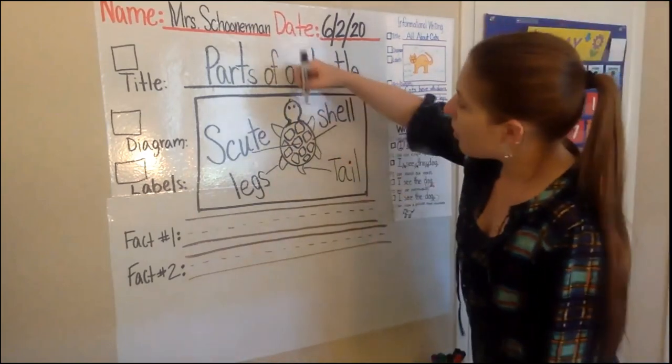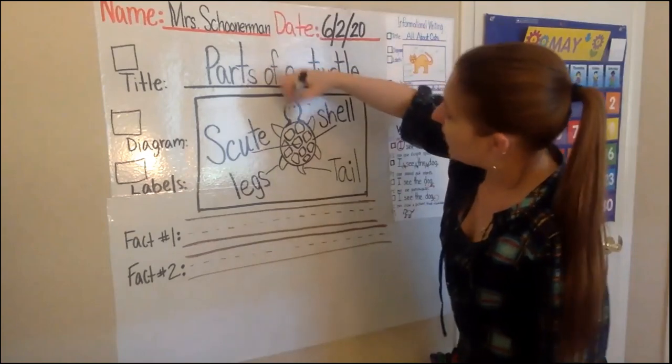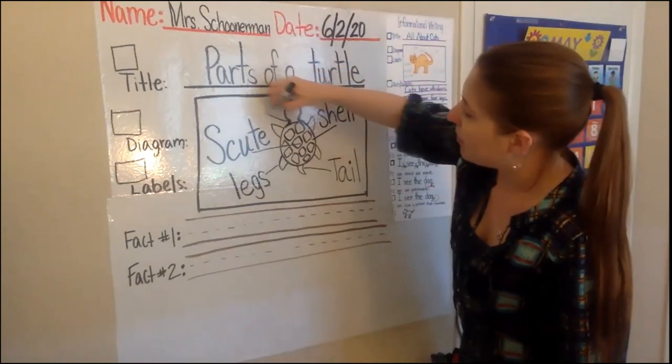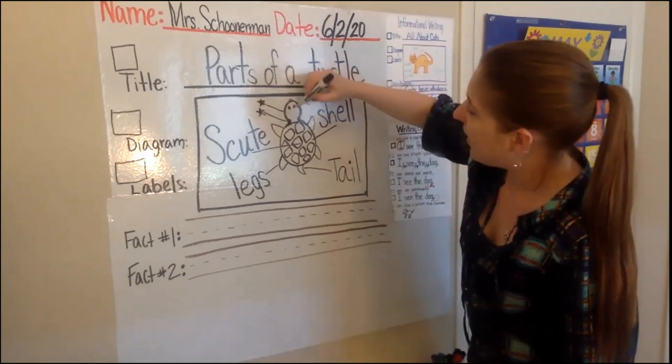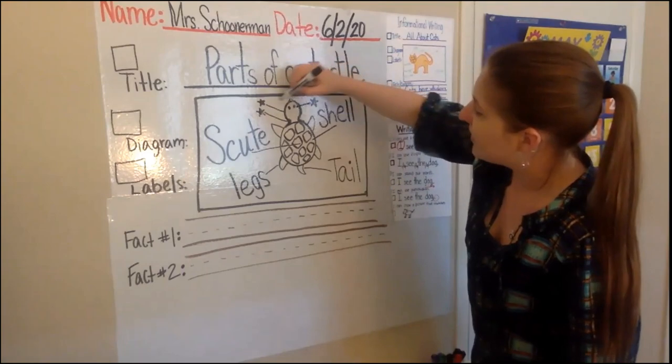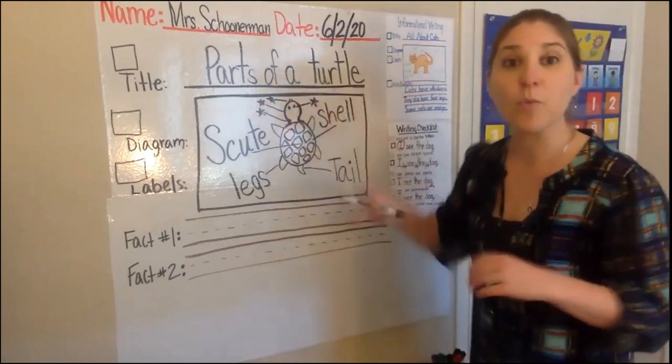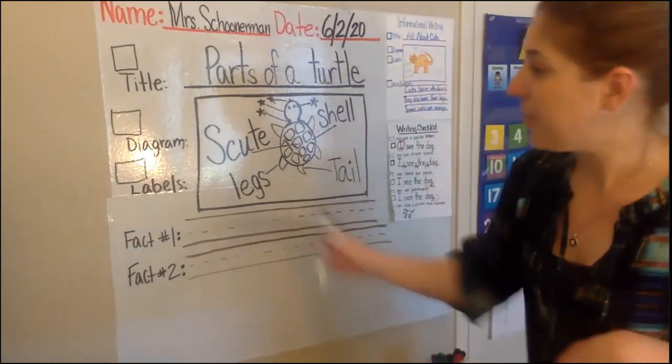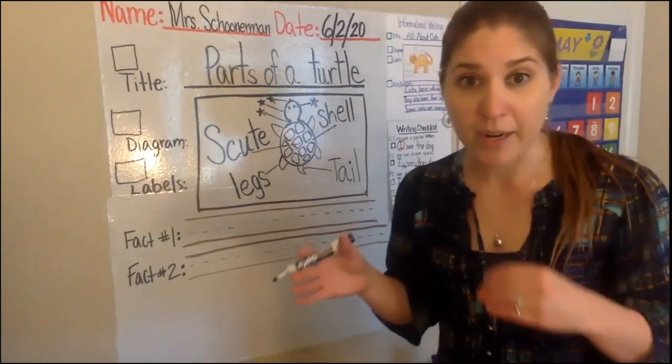All right. At home, you could go ahead after the video is over. Your challenge is add the parts of the head. So go ahead and add a label for the neck. Add a label for its head. Add a label for the eyes. Add a label for the mouth if you're feeling up for it. That's your extra challenge.